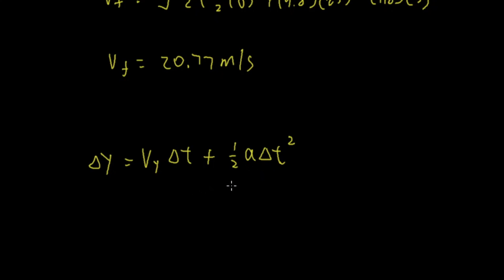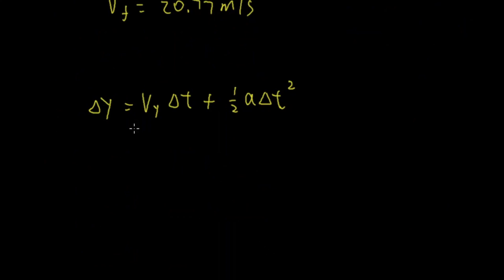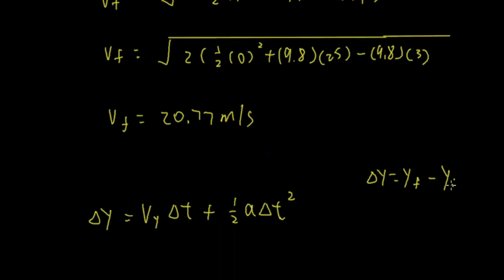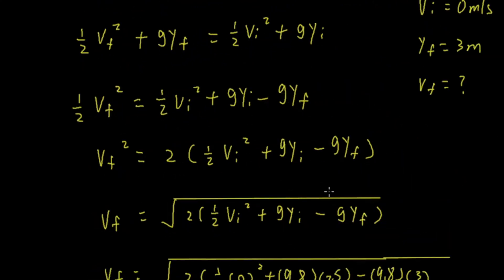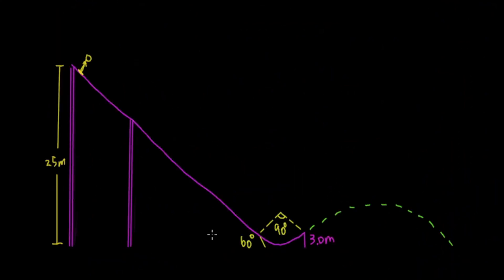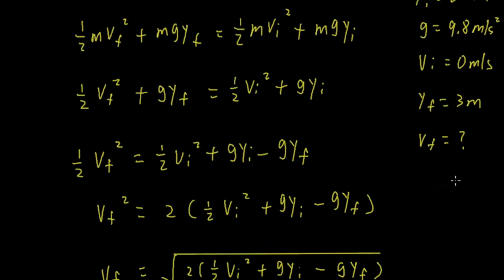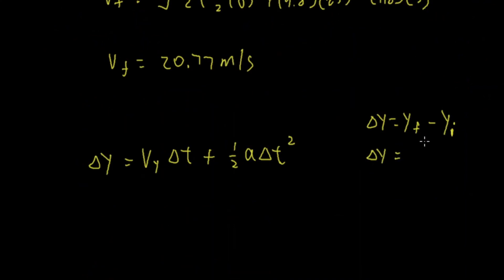We know the change in height. Note that the y_final and y_initial here are for the kinematic (projectile) part, not the energy equation. For the kinematic equation, y_initial is 3 meters and y_final is 0 meters, so the change in height equals 0 minus 3, giving Δy = negative 3 meters. Now we calculate the velocity in the y direction by breaking the velocity into components.